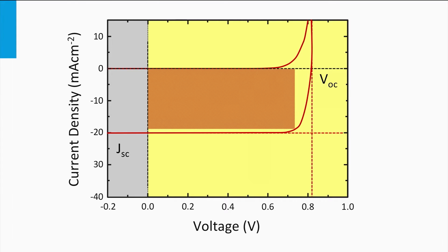If we look at the JV curve, this is indicated by a relatively low short circuit current density, while due to the large bandgap, a higher open circuit voltage can be obtained.